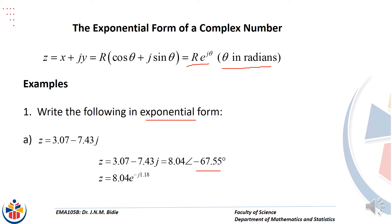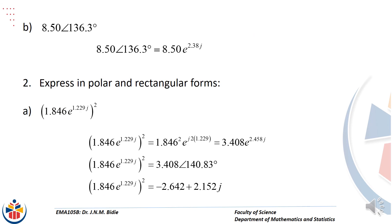You cannot put degrees as the power of E in exponential form — you must change it to radians by multiplying degrees by π divided by 180. For part b, which is already in polar form, all we need to do is change the angle to radians. Then we move backwards from exponential form to polar and rectangular forms.